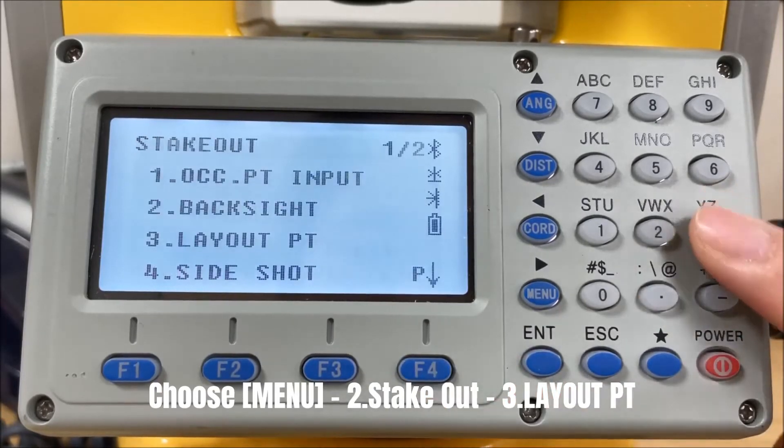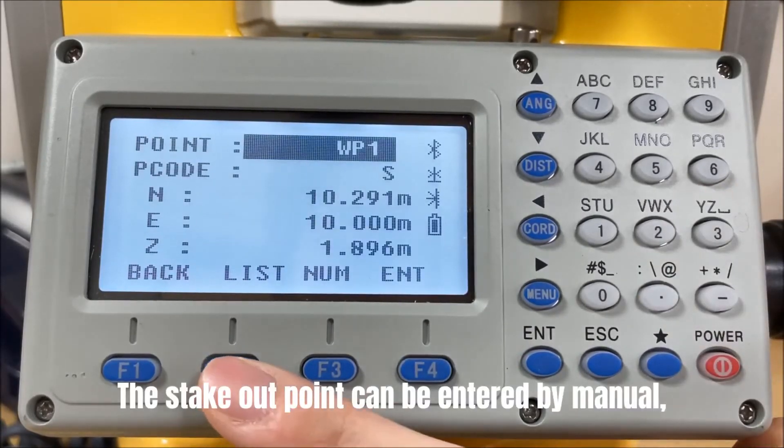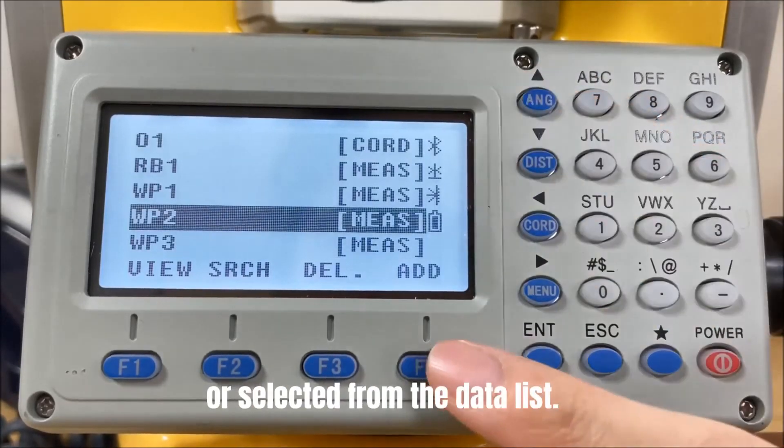Select the third one, point. The stakeout point can be entered by manual, or selected from the data list.